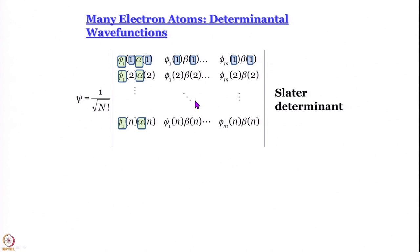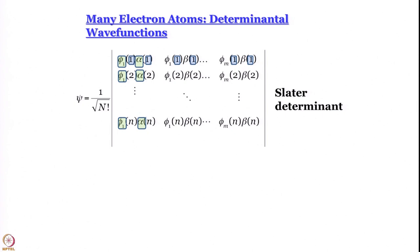There are textbooks that use the transpose convention - they are one and the same - but for this course let us write Slater determinants so that going from left to right in a row the electron label remains the same and the spin orbitals change from lower to higher energy. Going from top to bottom, the spin orbital remains the same and the electron levels change from 1 to 2 to 3 up to N. The last orbital is phi_m - not phi_n - because for any given orbital you can generate two spin orbitals: one with alpha and one with beta, so m must be less than n. For even n, m equals n over 2.